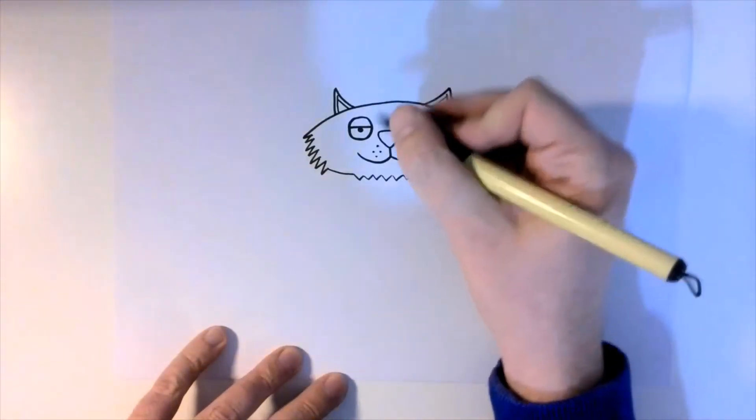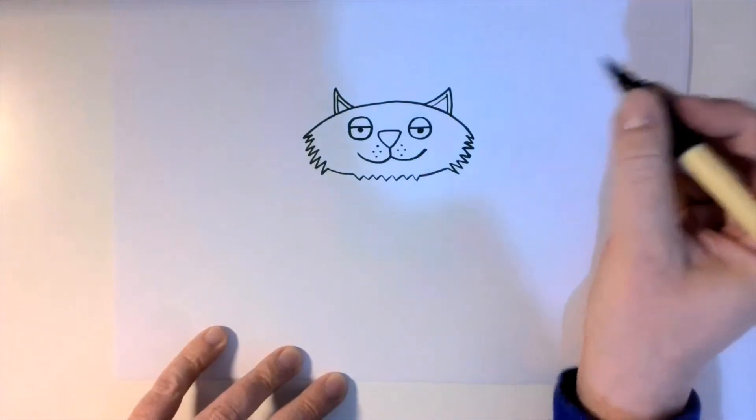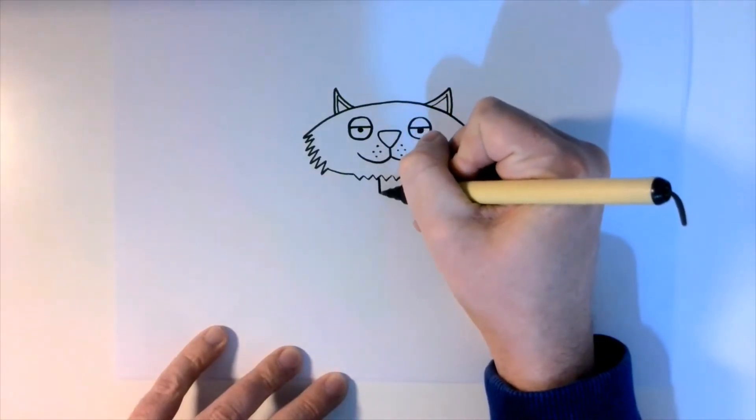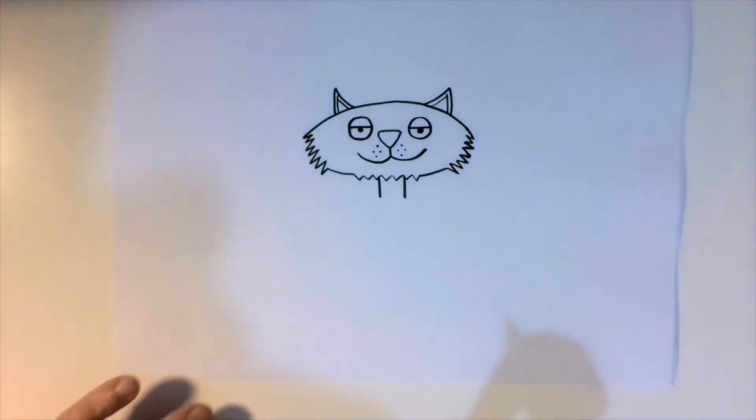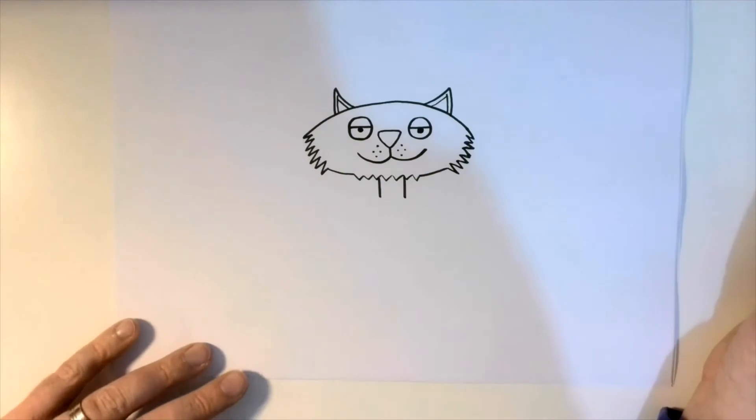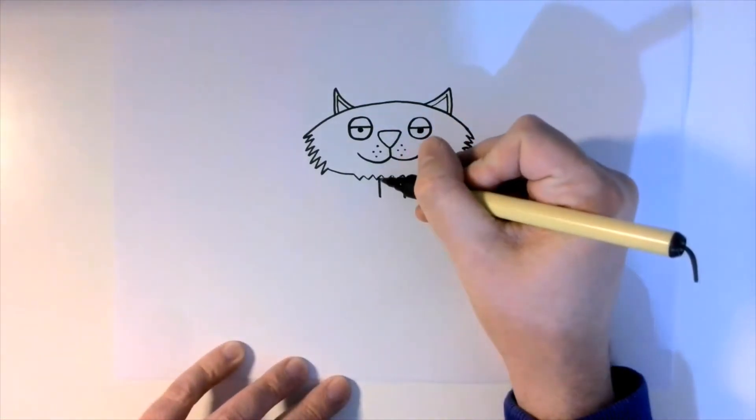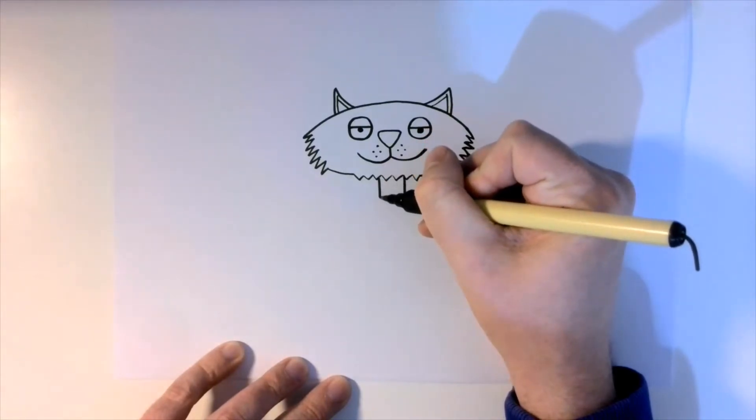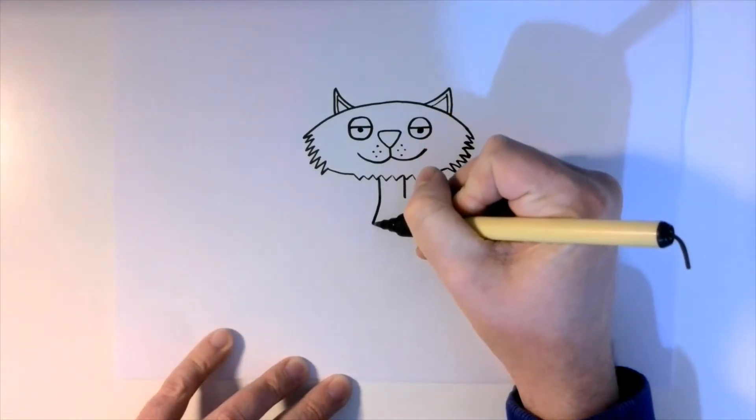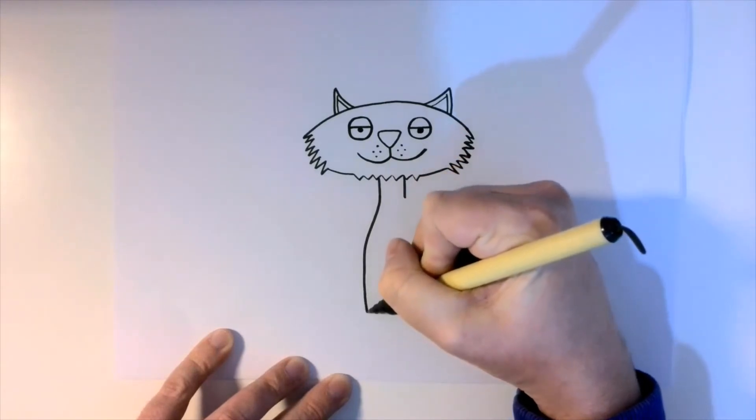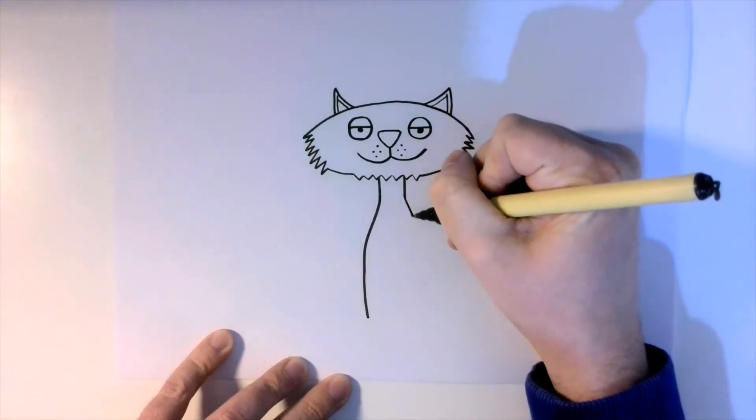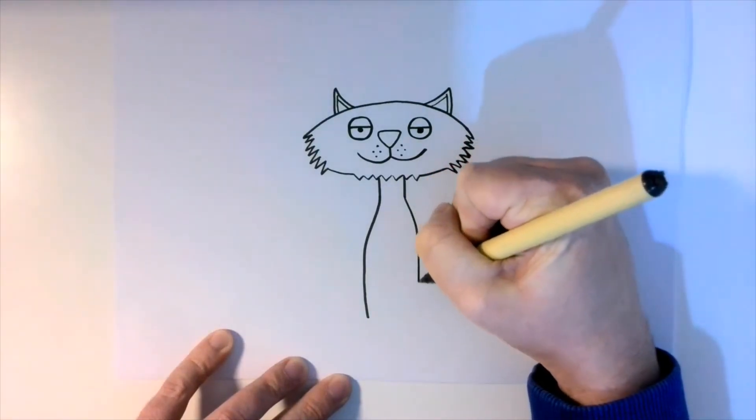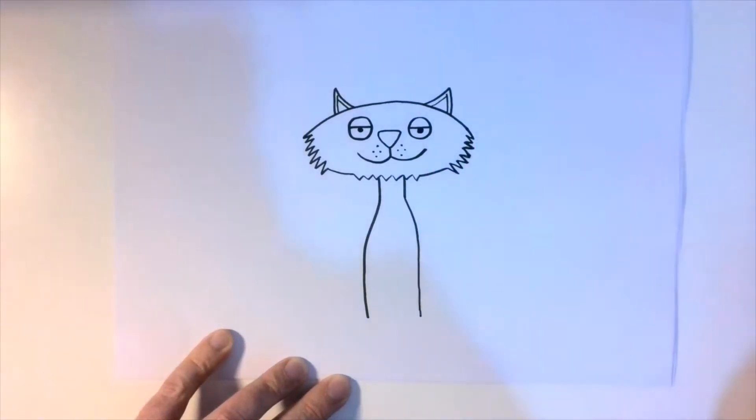This is where we start to think about the body. I'm going to give my cat quite a funny thin neck. From that point, it's going to be quite a curved line, bit like a milk bottle I suppose, and come all the way down here like that. We're going to try and do the same on the other side, just like that. It's not exactly the same both sides, but that's okay.